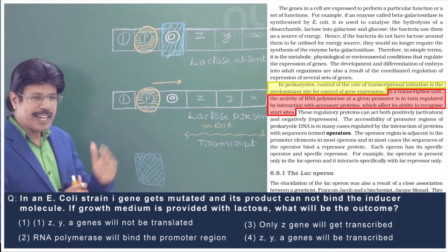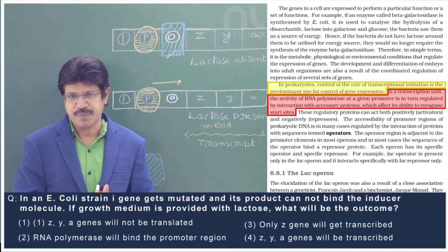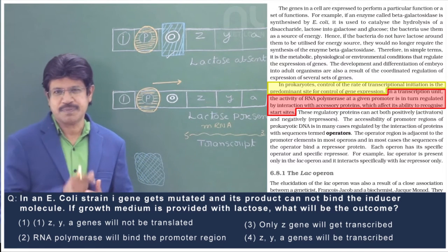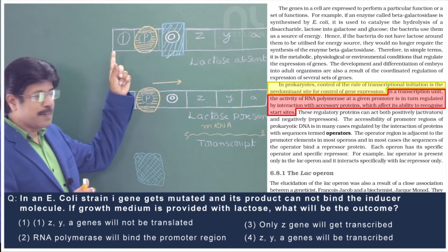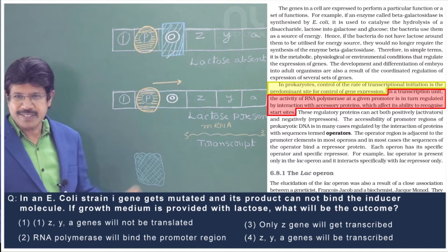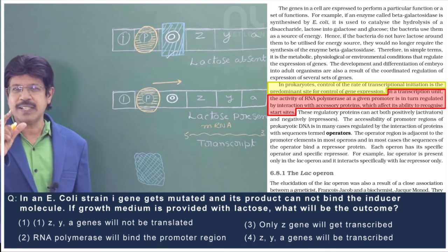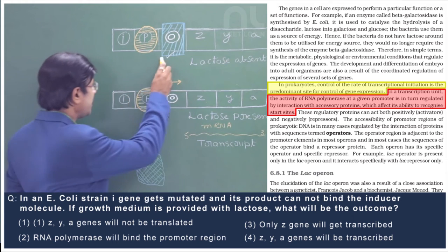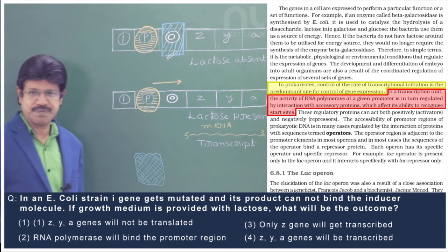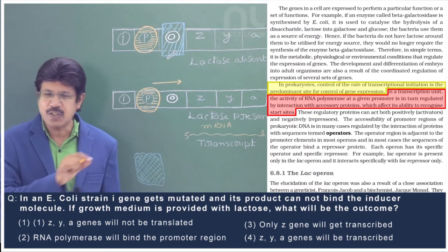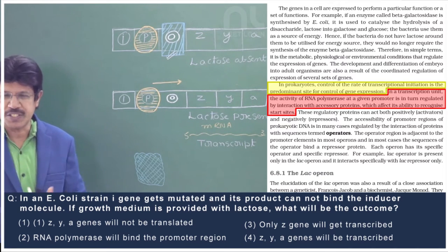In this Lac operon, it is transcriptionally regulated gene expression. It is a prototype — the initial model. In this, RNA polymerase at a given promoter site, whose activity depends upon interaction with an accessory protein. This accessory protein is the product of the I-gene. That I-gene — it is not an inducer; it is an inhibitor and it is a constitutive gene.